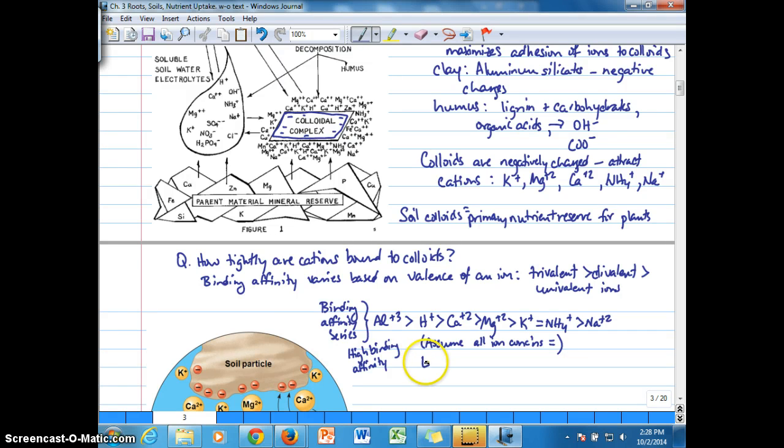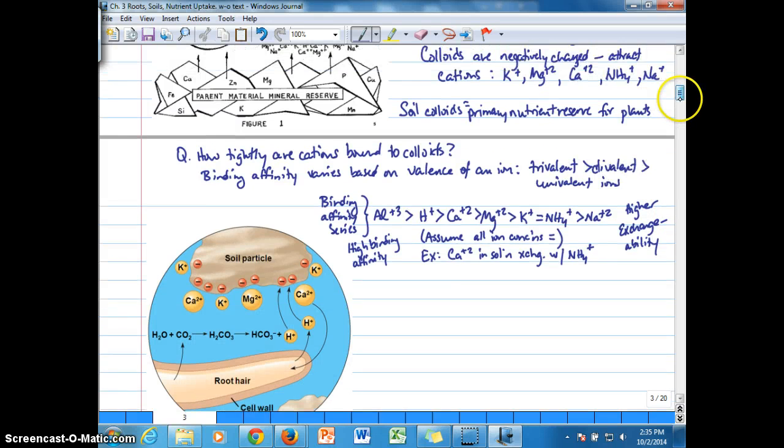What that means is, for example, if calcium ions are in solution, in the soil solution, then they exchange with something lower in the binding affinity series, assuming the concentrations are equal, such as ammonium. We can also assume that the ion concentrations are the same, or that lower binding affinity ions are less than higher binding affinity ions in concentration. Then that series would still apply.